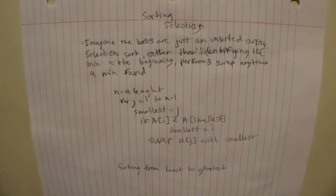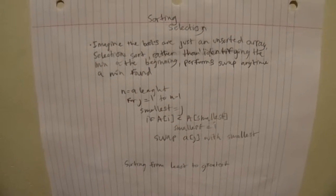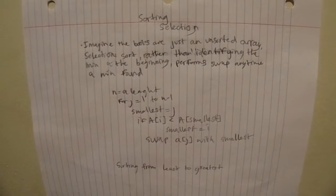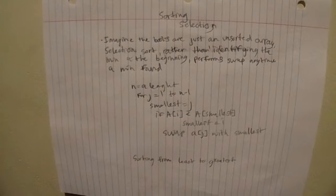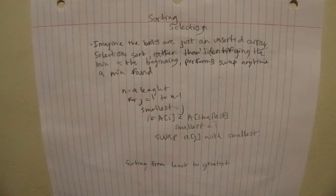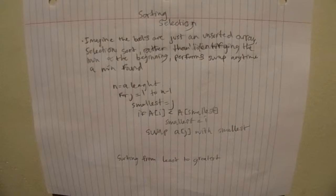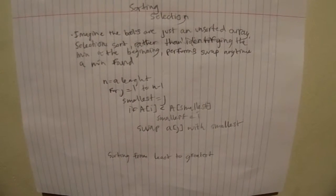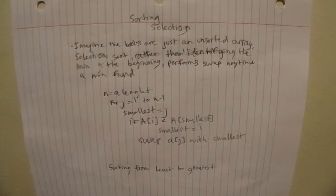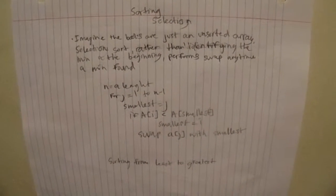Hello everyone. This video is not like a general tutorial on sorting — it's more of a video for my Advanced Placement Computer Science class. We were required to demonstrate three methods of sorting: selection sort, insertion sort, and bubble sort. I'm going to record myself doing the first one by sorting books, and the first sorting method I'm going to do is selection sort.